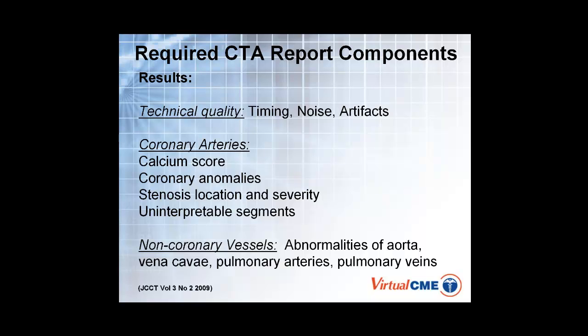There should always be some information about the non-coronary vessels: the aorta — is it enlarged, dilated, is there atherosclerosis — the vena cava — do they have a normal course — the pulmonary arteries — are there filling defects — the pulmonary veins — how many, how do they come in, and if the patient's had an ablation before, is there a stenosis there or not.